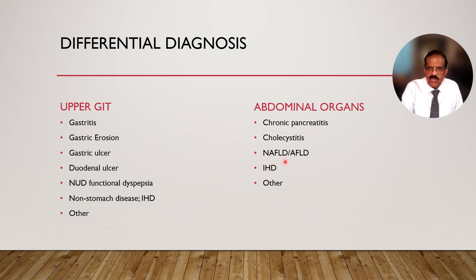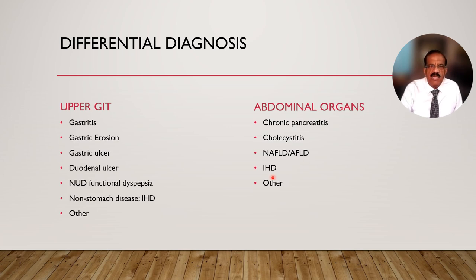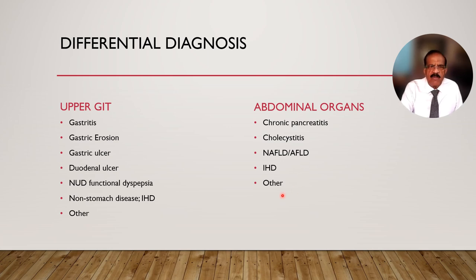Non-stomach diseases include chronic pancreatitis, cholecystitis, non-alcoholic or alcoholic fatty liver disease, which may cause mild discomfort, and importantly ischemic heart disease, which we never want to miss because it could have very serious implications — particularly in women and particularly when there is inferior wall ischemia. On detailed questioning you will have suspicion of ischemic heart disease if the symptom comes on exertion or there is sweating. In elderly patients, ischemic heart disease should always be kept in the differential diagnosis.